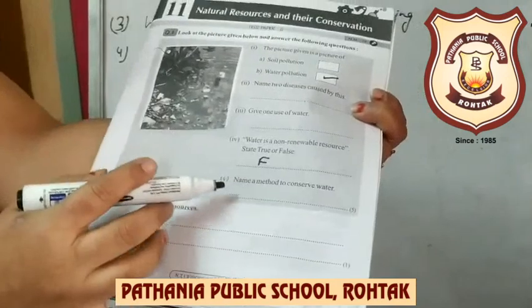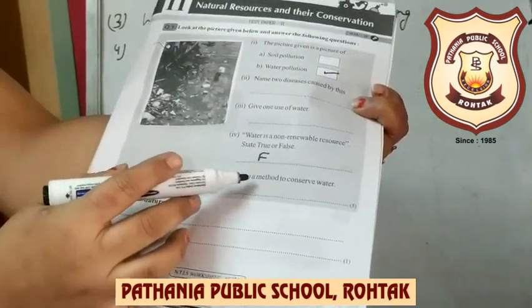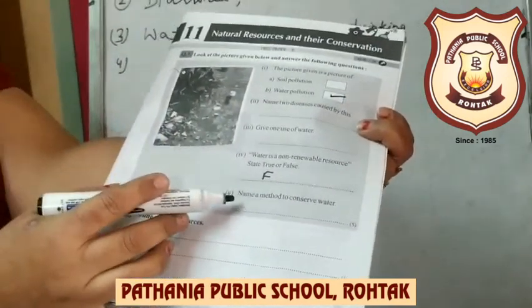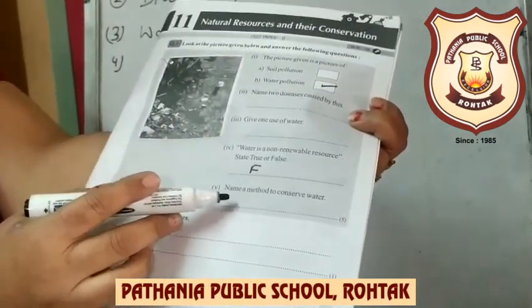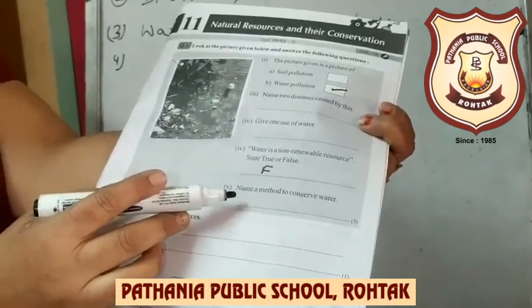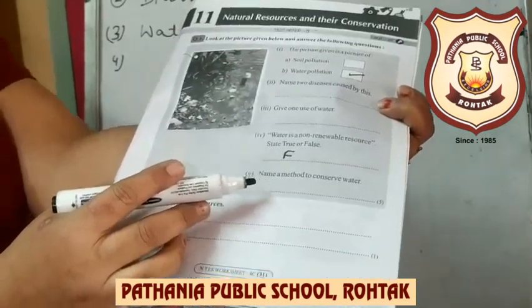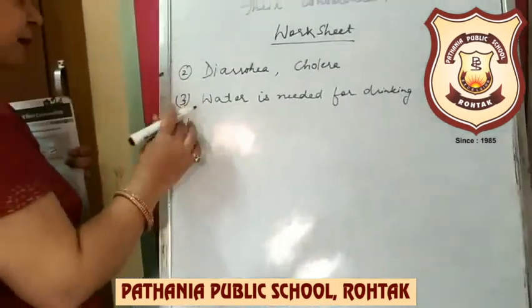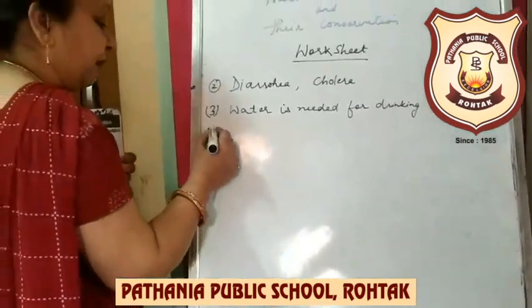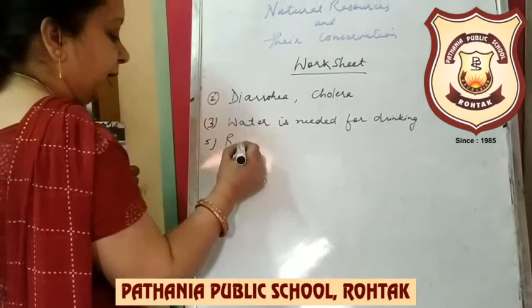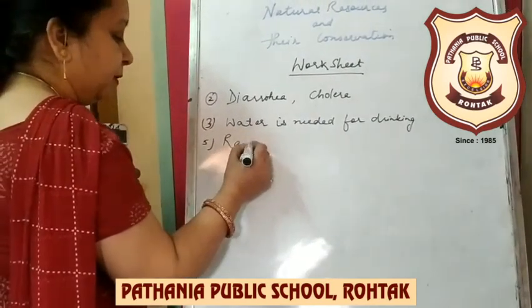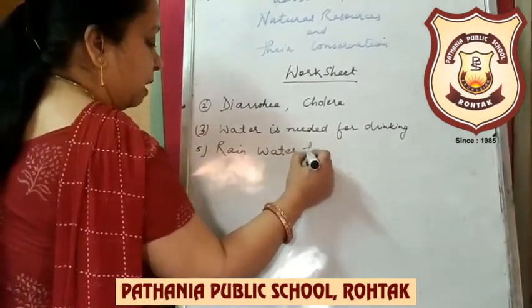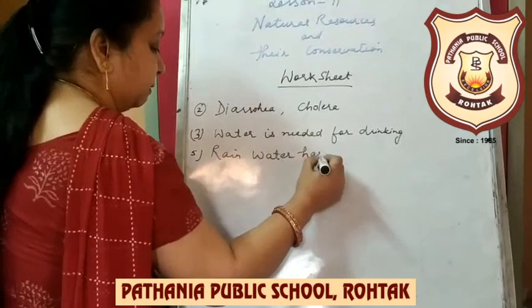Question number five: Name a method to conserve water. The main method is rainwater harvesting. Write here: rainwater harvesting.